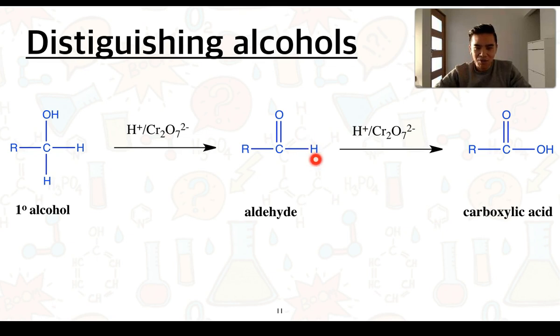And then going from an aldehyde to a carboxylic acid, we can see that this hydrogen becomes an OH. So we've got a gain of oxygen there. So you can use that as a bit of a guide to determining whether substances have undergone oxidation. Reduction would be the opposite of what I've mentioned earlier.